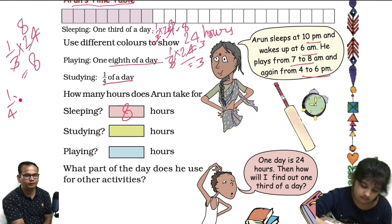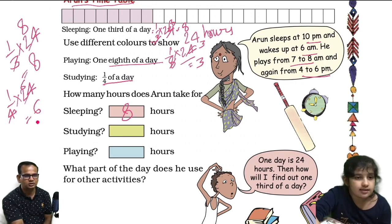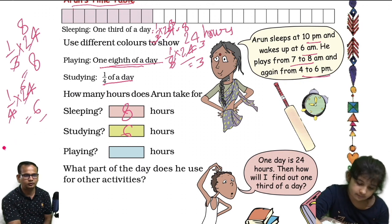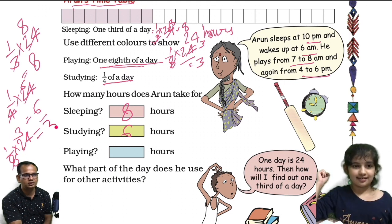And studying: studying is one fourth of a day. One fourth of 24 — that is 24 divided by 4 — equals 6 hours. So studying takes 6 hours. And playing is one eighth of a day: one eighth of 24 equals 3 hours. So playing takes 3 hours.